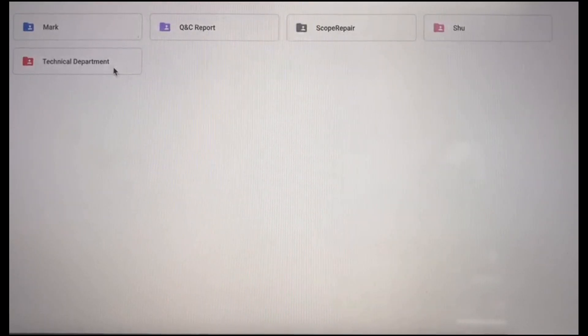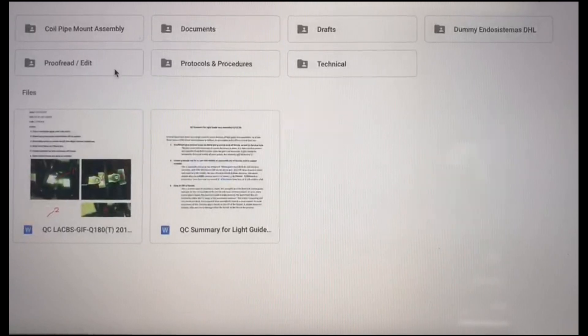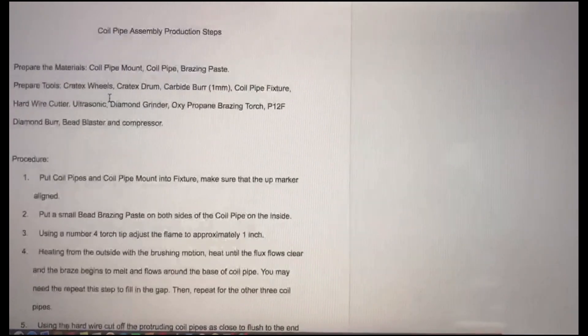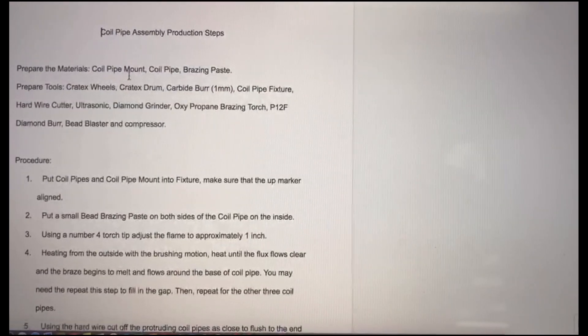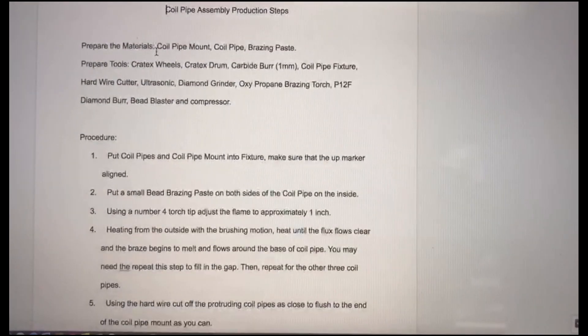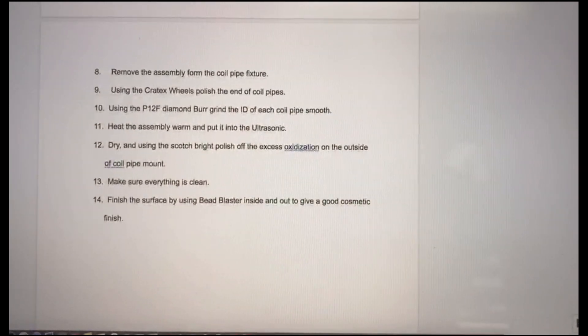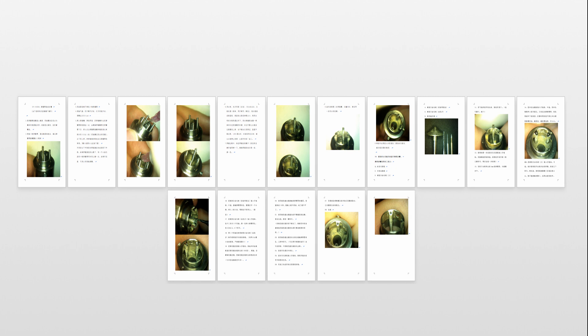In order to produce coil pipe assemblies of consistent quality, LASC has formulated a 28-step production procedure illustrated in article and graphical formats. Our technical department has trained a group of individuals who specialize in production of these types of assemblies.